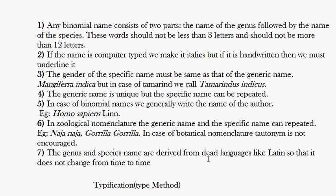There is not only the binomial name — sometimes we use the trinomial name, introduced by Lackmark, which consists of three words. In the animal kingdom, the third word — apart from the genus and species name — is the subspecies name. In the plant kingdom, the third word represents the variety.